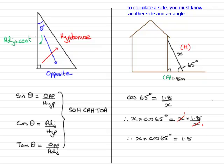Now, to get x, all I need to do is divide both sides of the equation by the cosine of 65 degrees. So, I'll do that now. I'll divide this side by the cosine of 65 degrees. But I must remember to do that on the other side. So, divide that by cosine of 65 degrees.